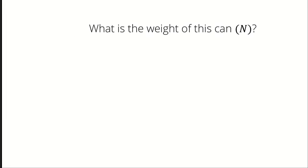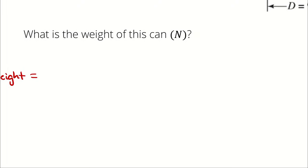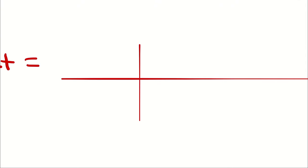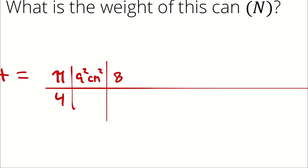I'm going to bring that calculation over here, so we have room for units. So we have pi over 4 times 9 squared centimeters squared. That's the diameter of the can multiplied by 8 centimeters. That's the height of the can. So far we have volume displaced.